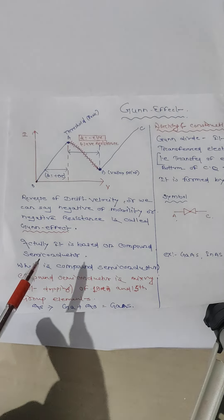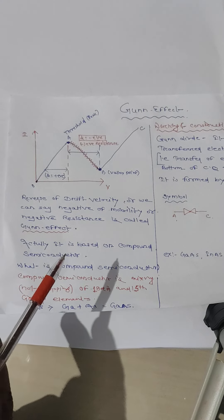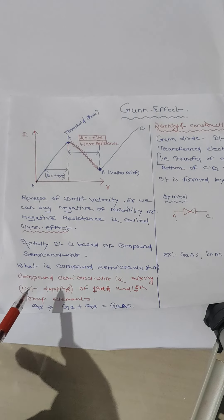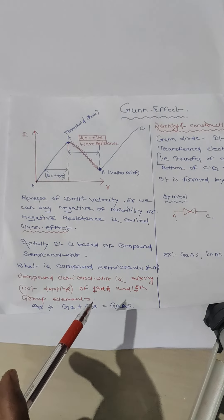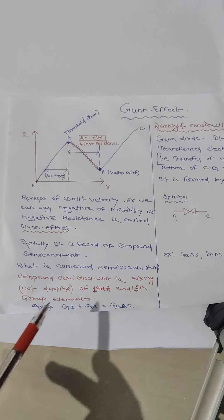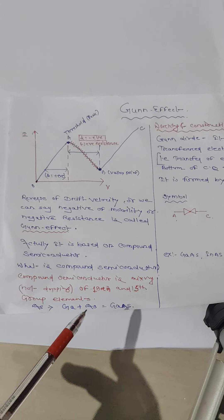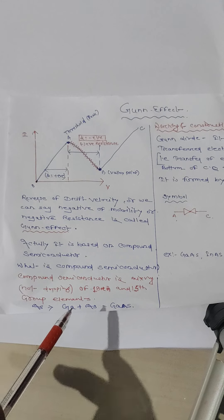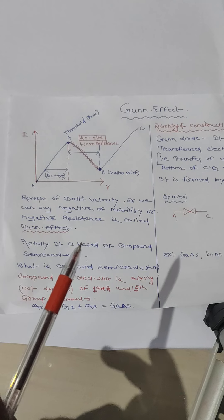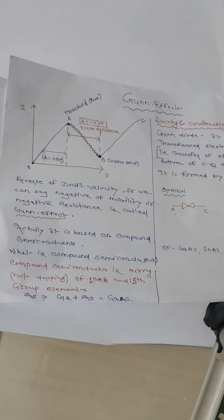The Gunn effect is based on compound semiconductors. A compound semiconductor is not an impure semiconductor — it is a mixing semiconductor of Group 13 and Group 15 elements. For example, gallium and arsenide are mixed together, not doped into each other. Gallium arsenide (GaAs) is the best example of a material exhibiting the Gunn effect.